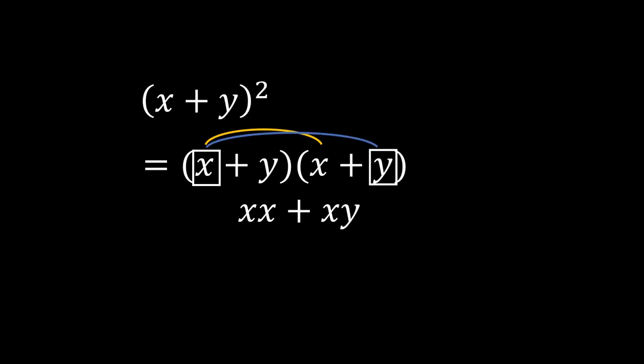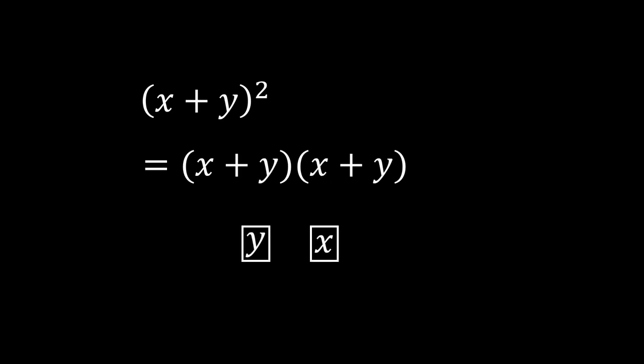We can now do the same process but now choose the y from the first bracket, and we will get yx and yy. Notice that each term is made by choosing an x or a y from the first bracket and choosing an x or a y from the second bracket. And when we expand all the terms out, we get every possible choice of x's and y's.